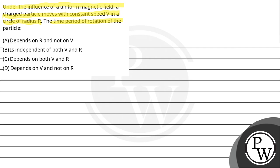The time period of rotation of particle: option A depends on R and not on V, option B is independent of both V and R, option C depends on both V and R, and option D depends on V and not on R.